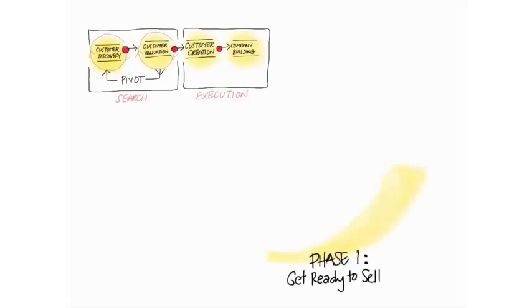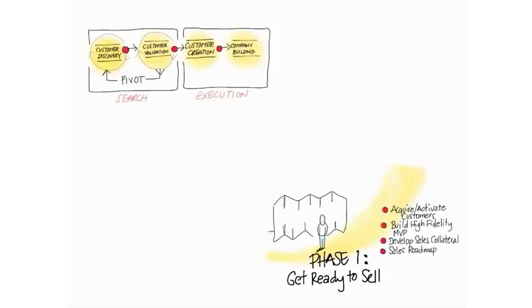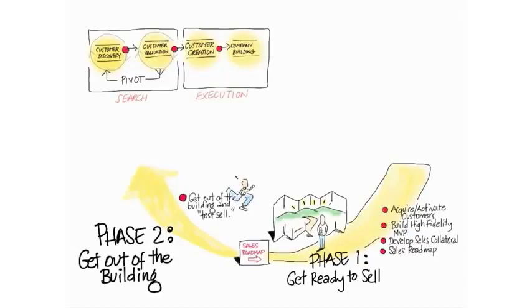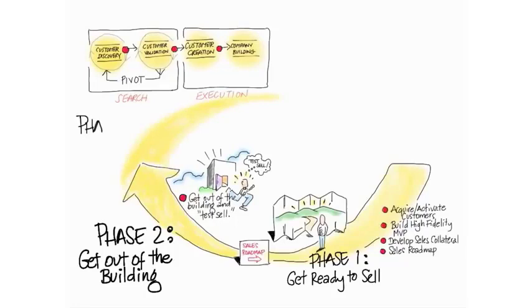So phase one is you're going to get ready to sell. If it's a physical product, you're going to develop sales collateral, meaning the data sheets and price lists and demos. If it's a web and mobile product, you're going to try to acquire and activate customers, and you're going to build a high-fidelity minimum-viable product, which is a fancy word for your website or mobile app will look like it's almost done. Maybe the help files aren't there, but the core features that people will use. And then you get out of the building, physically or virtually, and you try to get out and sell and see if you get users or payers or both.